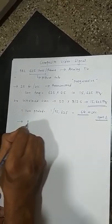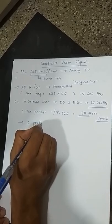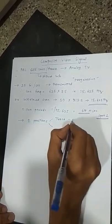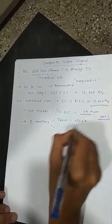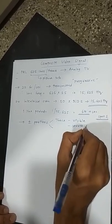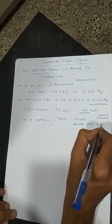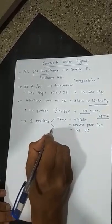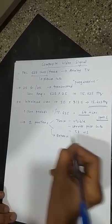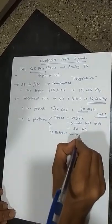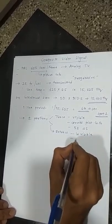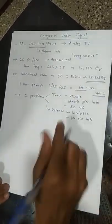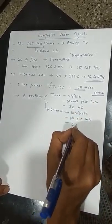we have two different portions of total line period. One is trace part which is visible, carries picture information and its period is 52 microseconds. Another is retrace period which is invisible, no picture information is carried and of course, its period will be 64 minus 52 which is 12 microseconds.